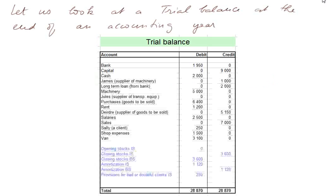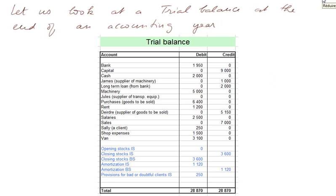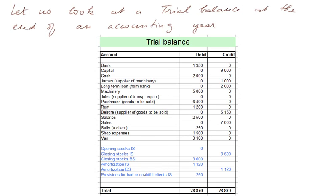Prepayments and accruals. Let us look once again at a trial balance at the end of an accounting year. In reality, during an accounting cycle there would be thousands of transactions and hundreds of accounts in the trial balance. But these 15 are sufficient to illustrate the various points we want to explain. We've already seen adjustments for stocks, amortization, and provision for bad or doubtful clients. Now we shall turn to adjustments for prepayments and adjustments for accruals.